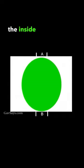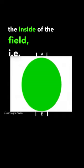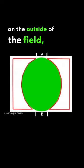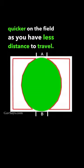Your aim is to own the inside of the field, i.e. the space of the rugby ball, and to put the opposition on the outside of the field, as this makes you quicker on the field, as you have less distance to travel.